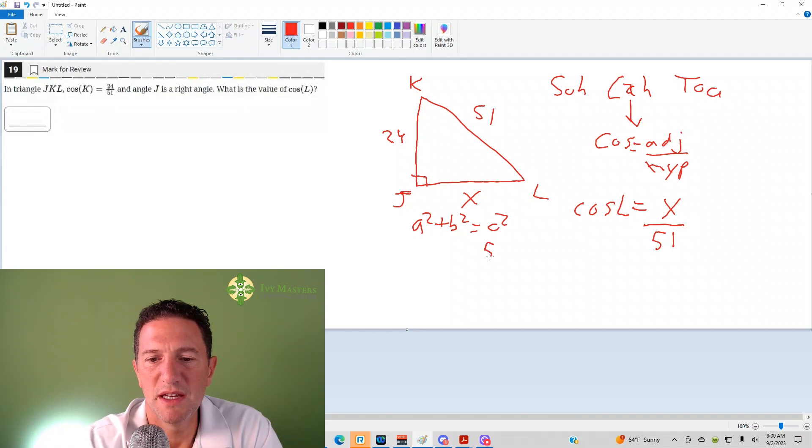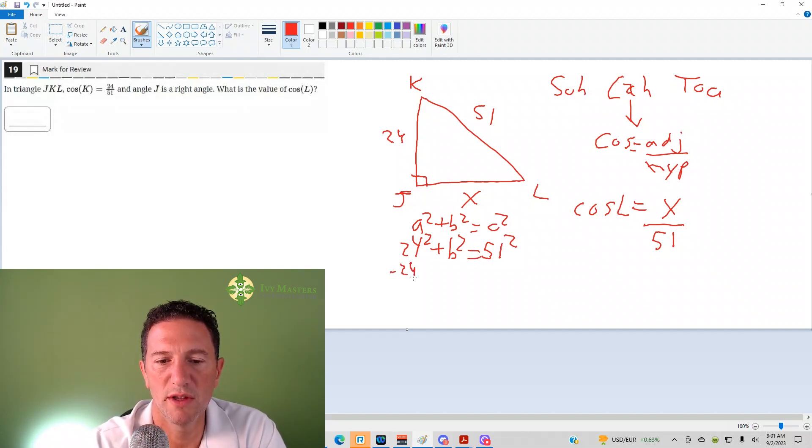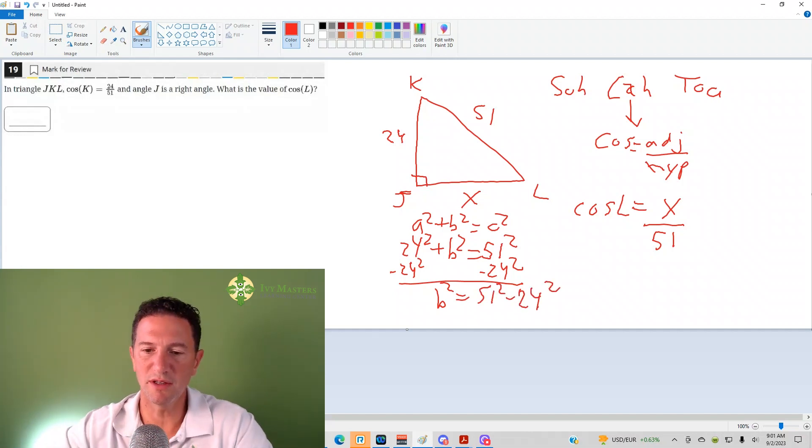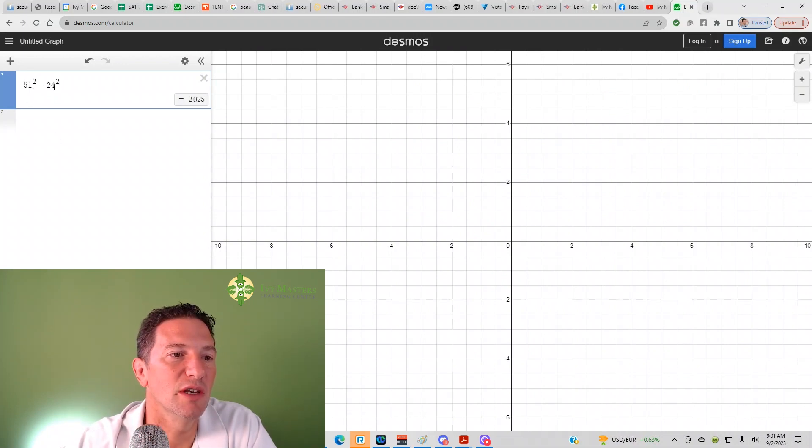Make sure that your C is your hypotenuse. The A and the B don't matter. So I have 24 squared plus B squared equals 51 squared. So now, if I subtract 24 squared from both sides, then we get that B squared equals 51 squared minus 24 squared. And so you could literally just plug 51 squared minus 24 squared into Desmos. Let's see it. Boom! There it is. I plugged it in already. I cheated. 51 squared minus 24 squared is 2025.